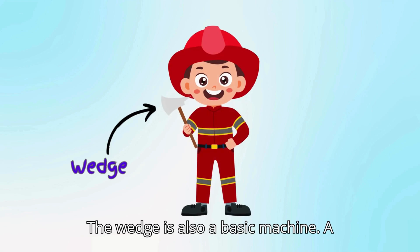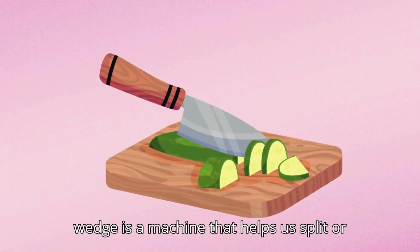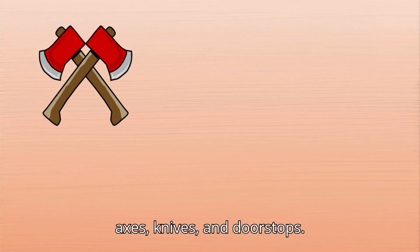The wedge is also a basic machine. A wedge is a machine that helps us split or separate things. Examples include axes, knives, and doorstops.